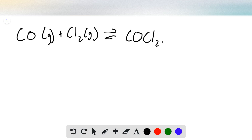This problem gives us the chemical equation CO gas plus Cl2 gas reversibly forms COCl2 gas with an equilibrium constant of 255 at 1000 Kelvin.